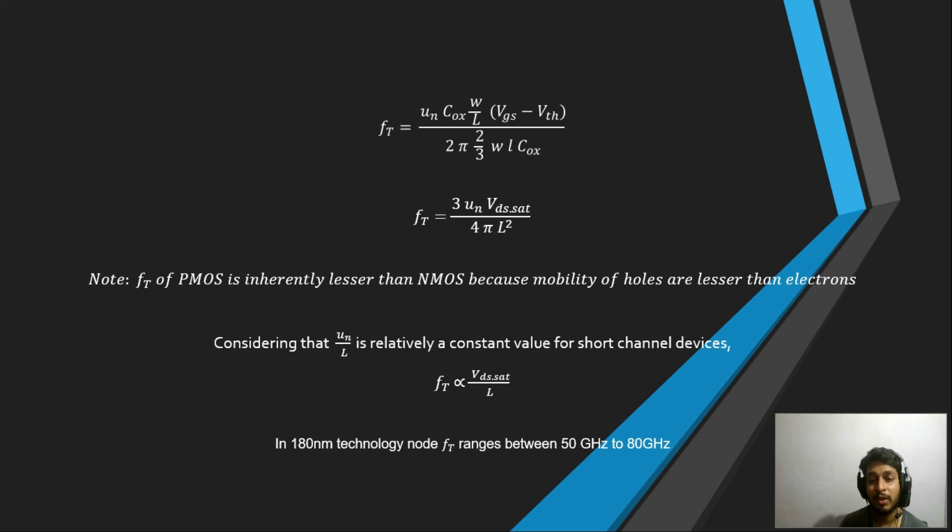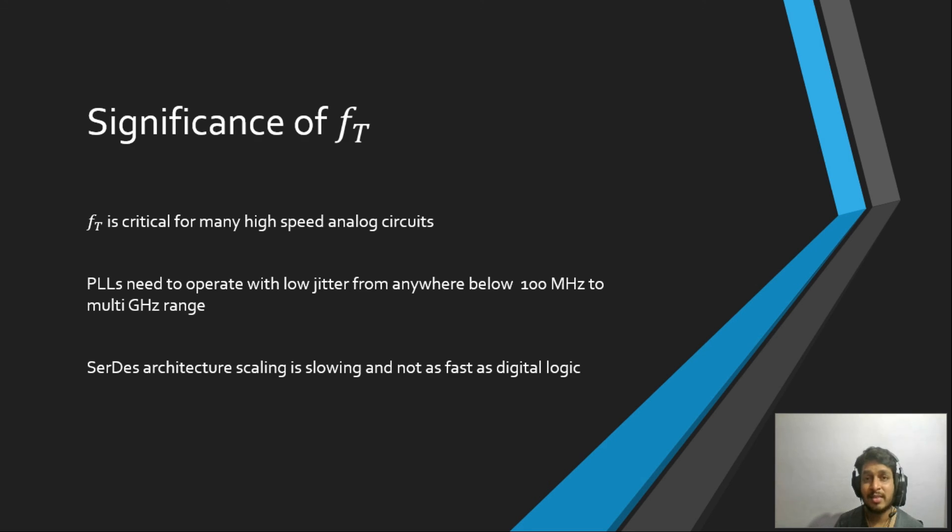Now let's discuss about the significance of fT. How is it so important in VLSI design or analog VLSI design? As we know, fT is critical for many high-speed analog circuits. First and foremost is PLL, which needs to operate with low jitter from anywhere from 100 megahertz to multi-gigahertz range. For this PLL to operate properly, fT of the transistor plays a critical role. Now if we decrease the channel length, if we scale—if we consider the scaling of transistors from 180 nanometer to down—what happens is the fT of the transistors goes up. And also we know that from 65 nanometer to 10 nanometer, the fT of the transistor has increased by 3.5 times. So much it has increased. So isn't it a good thing? Yes, it is, but it is not truly.